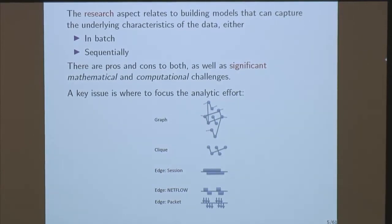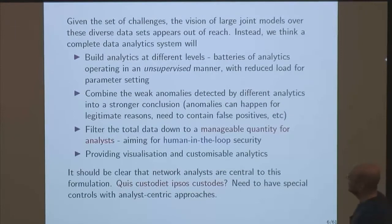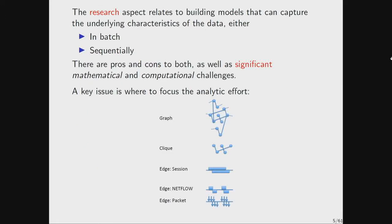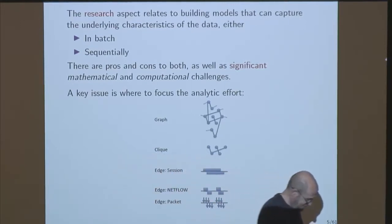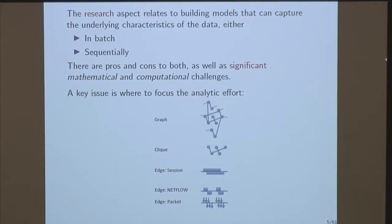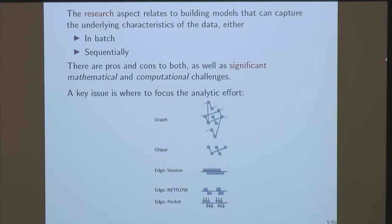The Bayesian statistician in me would say: just write down a giant joint probability model for all of that and integrate out any of the parameters you don't care about. You can do that with any sort of trick Monte Carlo you like. But it's impossible with the scale of the data to even fantasize about that. Specifying the model is impossible. Estimating it is impossible. Updating it is impossible.